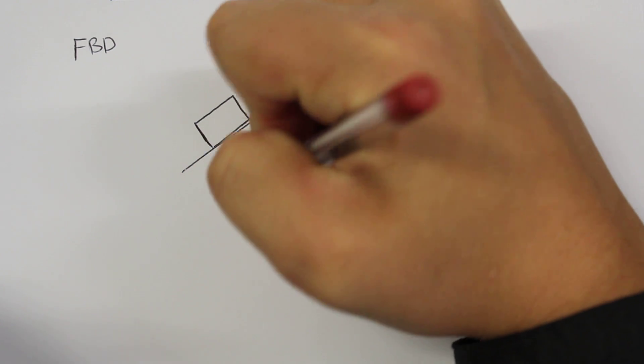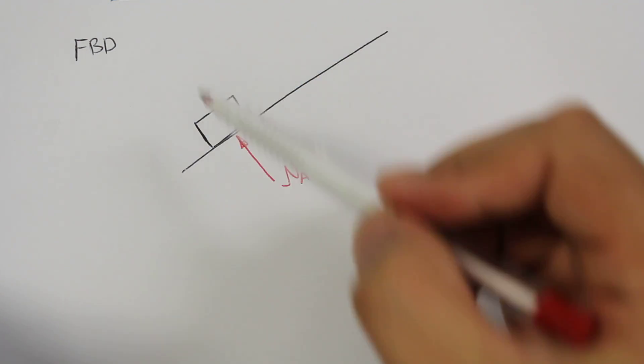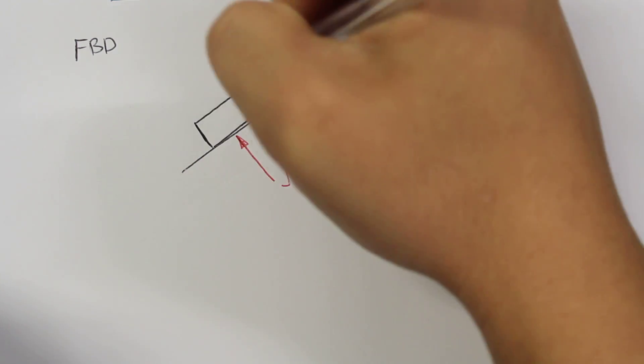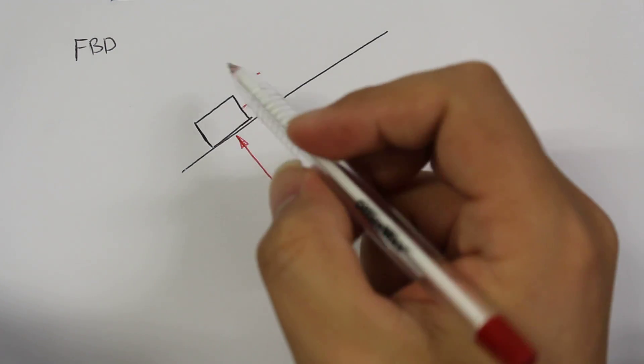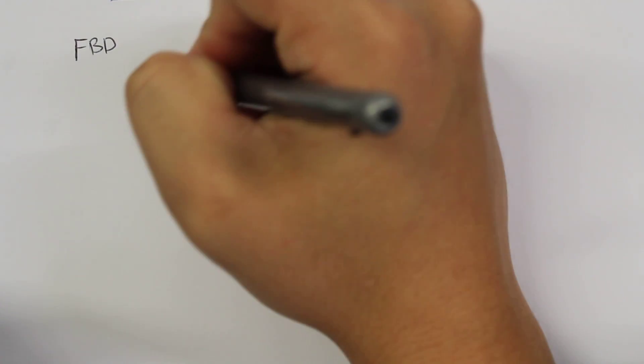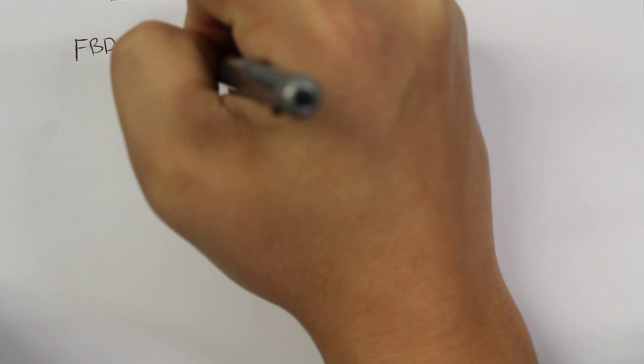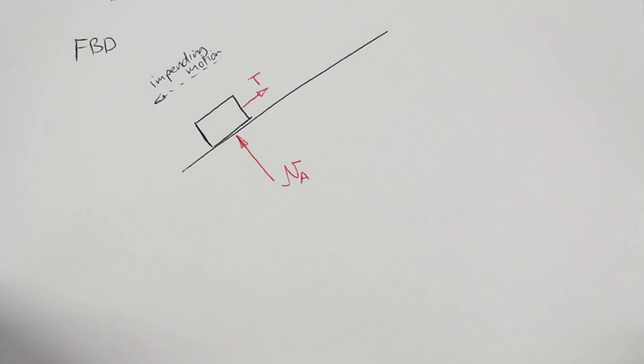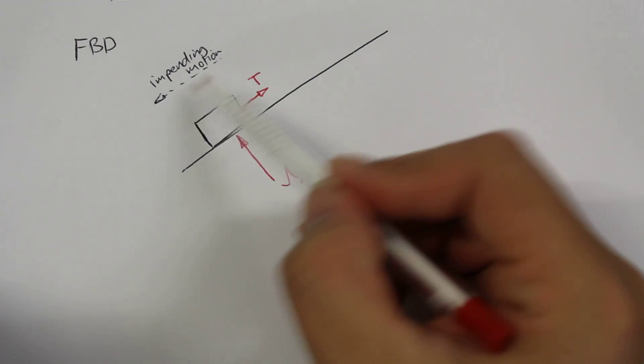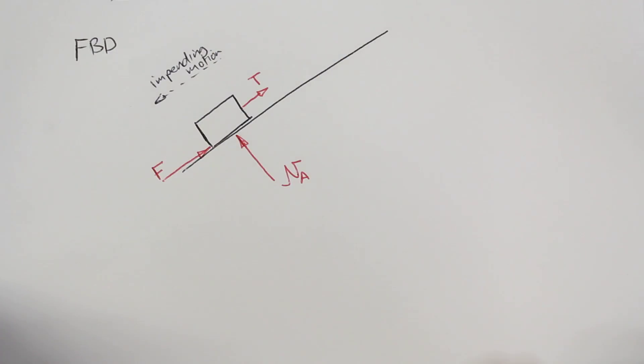Block A will have a normal force which is acting upwards. We'll have a tension force because of the string pulling it up the incline. The block will tend to move down the incline because when the angle is large enough, the impending motion will be towards the left, and friction will go in the opposite direction to this impending motion, so we'll go up the incline.